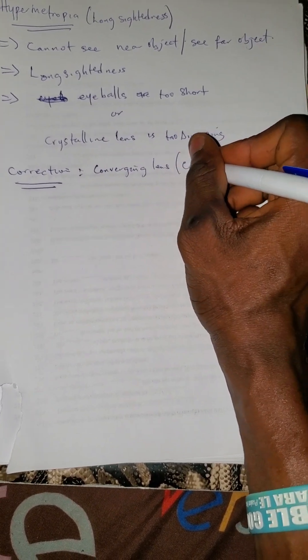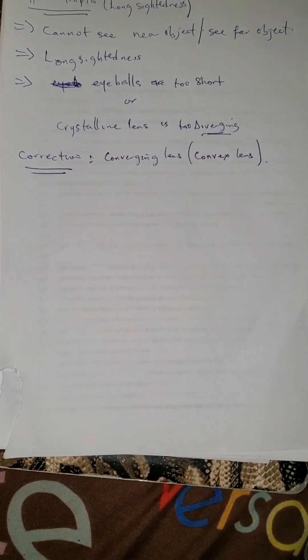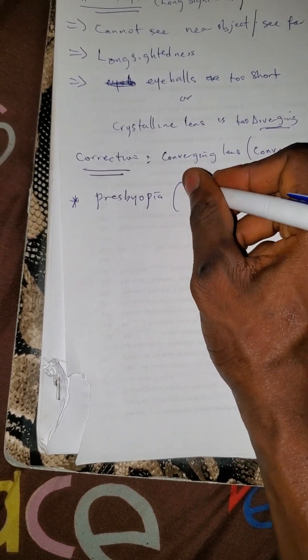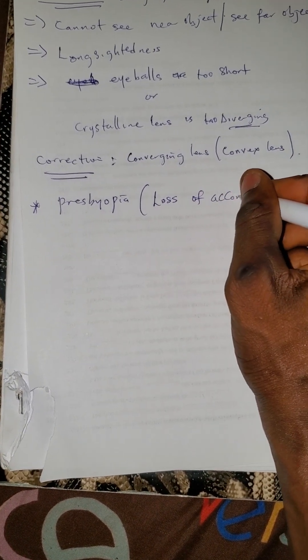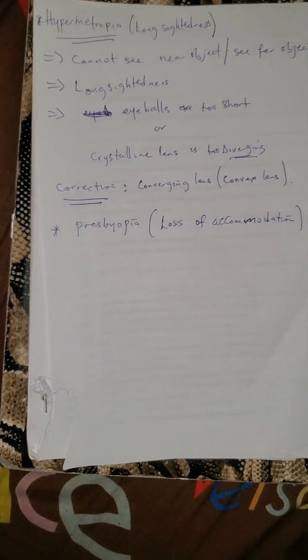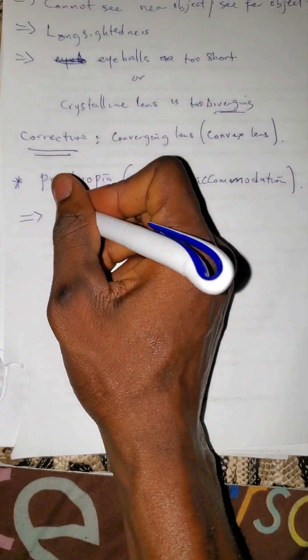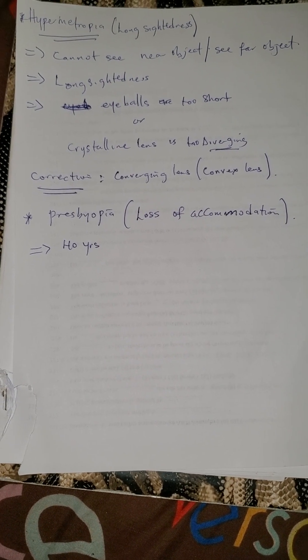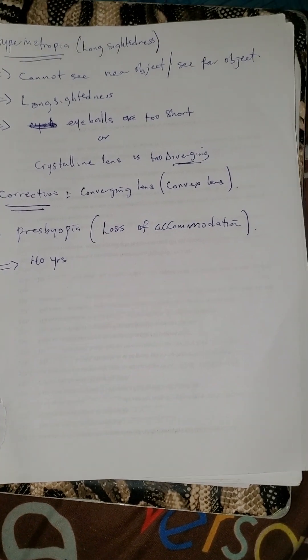To correct hypermetopia, the person uses the opposite of diverging — a converging lens, also known as a convex lens. Number three: presbyopia. Presbyopia is loss of accommodation — that is, the ability of the eyes to focus. This can happen to anybody, but most especially it happens to people above 40 years of age.